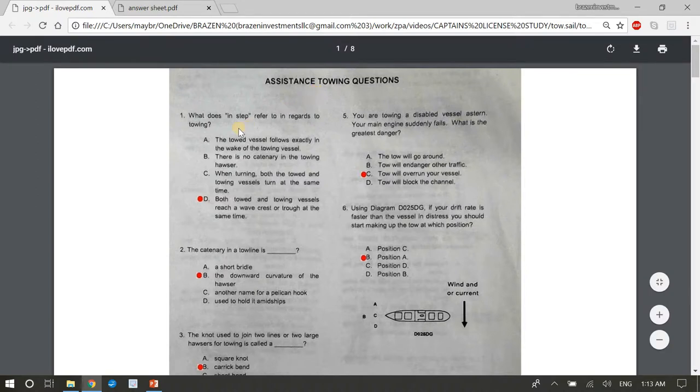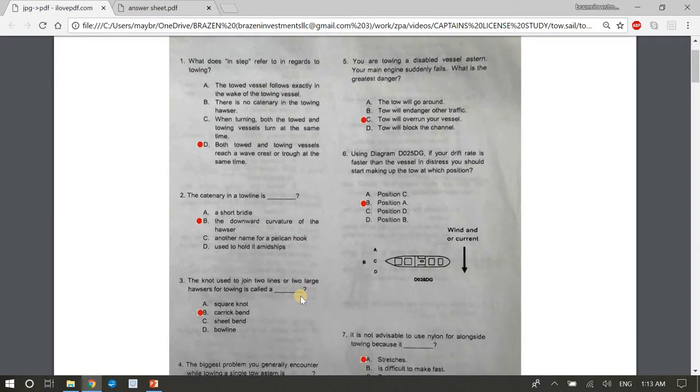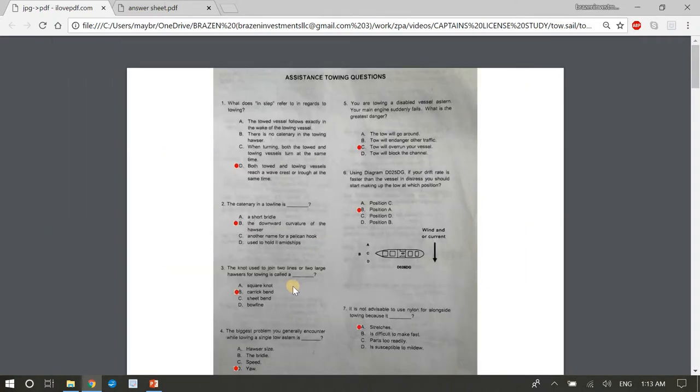This is the assistance towing questions. I think there's 45 questions here today. I think the actual exam is only 30 questions. Number one, what does instep refer to in regards to towing? The answer is D, both towed and towing vessels reach a wave crest or trough at the same time. That's instep. Two, the catenary in a tow line is blank. The answer is B, the downward curvature of the hauser. Question three, the knot used to join two lines or two large hausers for towing is called a carrick bend. You want to use a carrick bend knot.